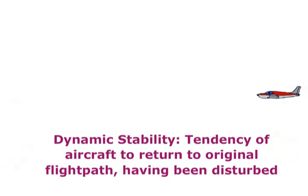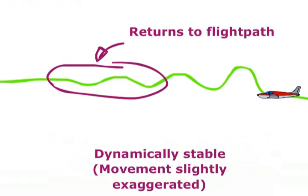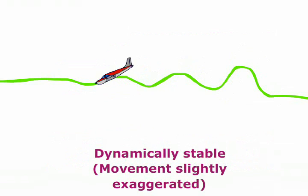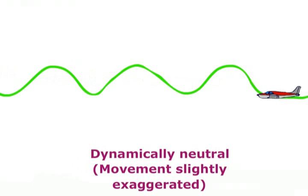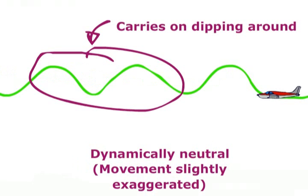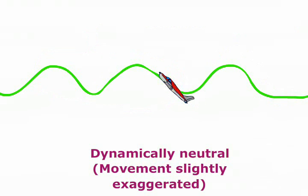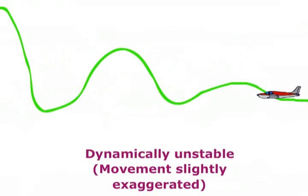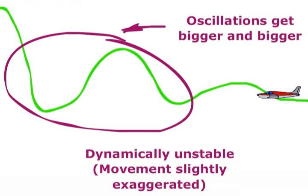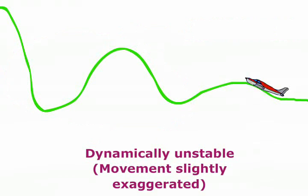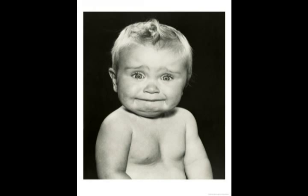Dynamic stability is the overall tendency for the aircraft to get back to its initial flight path. A dynamically stable aircraft will eventually return to the flight path after a few oscillations. A dynamically neutral aircraft will carry on oscillating like some horrendous roller coaster. A dynamically unstable aircraft will carry on oscillating but with increasingly large oscillations, which will probably end in tears and lots of vomit.